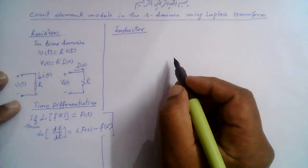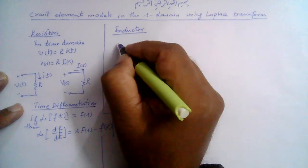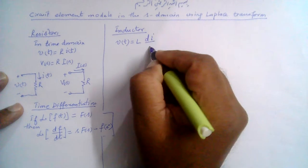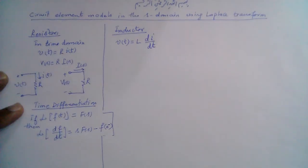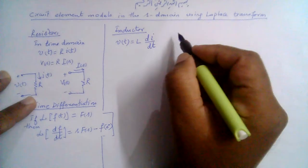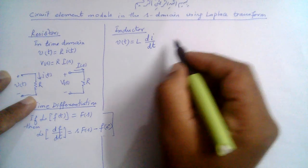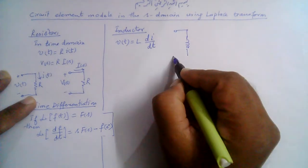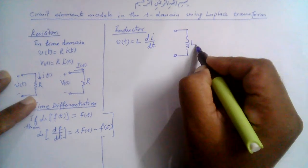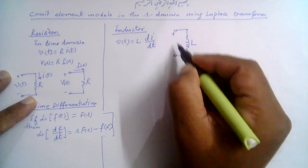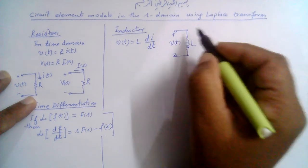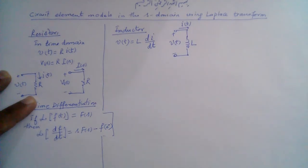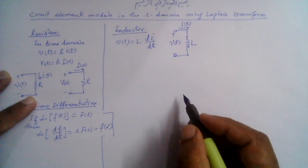For the case of an inductor, we know that the relationship in the time domain between the voltage and current is given by V(t) is equal to L·dI/dt. We can represent this as an inductor L with voltage V(t) across it and current I(t) flowing through it.